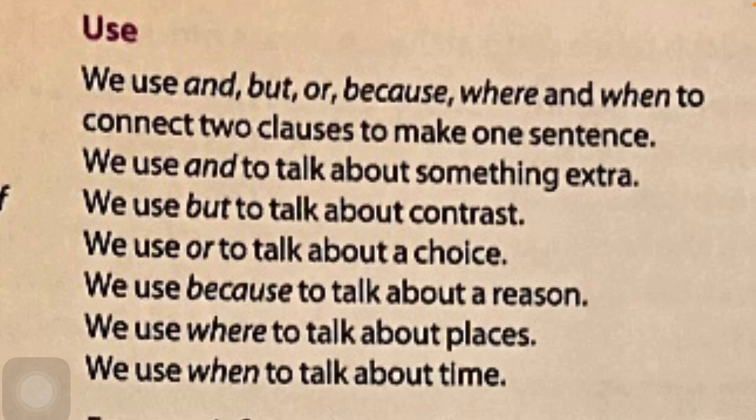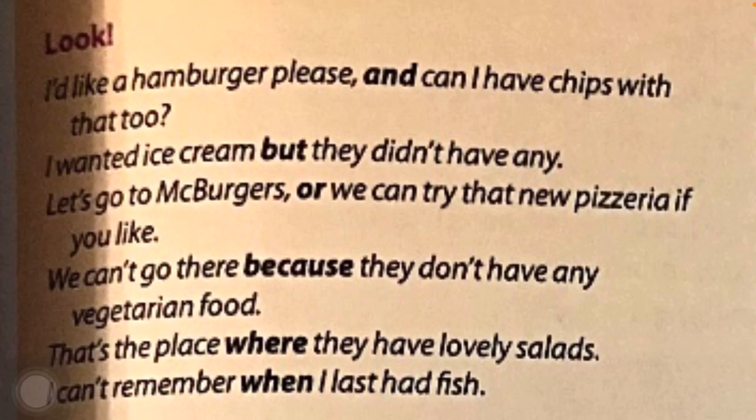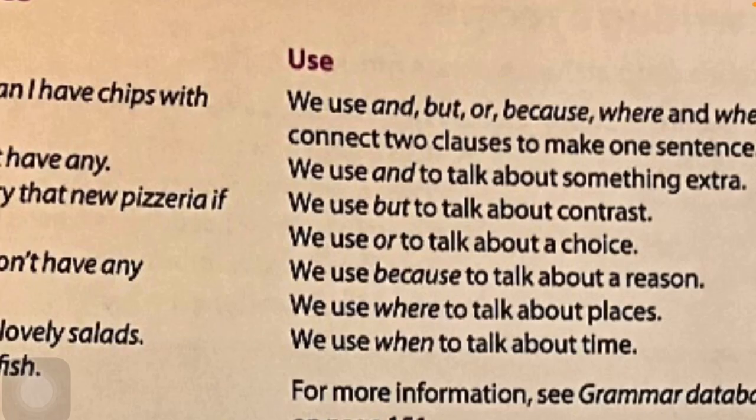To make one sentence. Яғни біз және, бірақ, немесе, себебі, қайда, және қашан деген сөздерді екі тармақтан бір сөйлем — яғни екі бөлек сөйлемнен тұтас бір сөйлем шығару үшін қолданамыз. We use 'and' to talk about something extra. Біз 'and' / және деген сөзді бір қосымша нәрсені айту үшін қолданамыз. For example: 'I'd like a hamburger, please, and can I have chips with that, too?' — Маған бір гамбургер өтініш, және мен оның қасына фрай алалам ба?